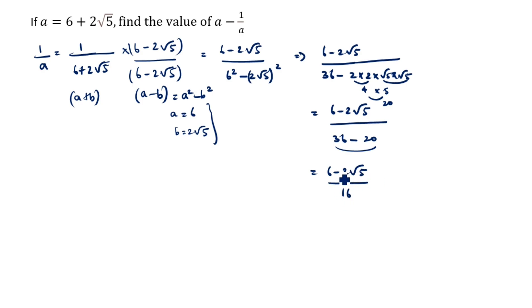This is 6 minus 2 root 5. So you can take 2 as a common. So 3 minus root 5 divided by 16. 2 times 8 is 16. So what is the answer? 3 minus root 5 divided by 8.